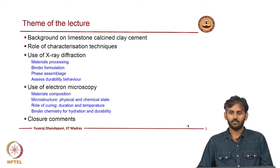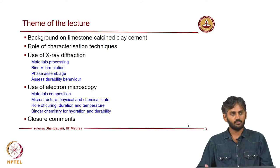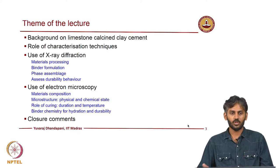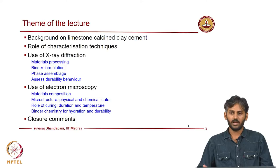For instance, XRD can be used to narrow down on material processing, formulations of binders to study, assess phase assemblage, and also to explain durability behaviors. We will then move into microscopy and look at how microscopy techniques can be used to assess material composition, microstructure, physical and chemical state, role of curing — involving curing duration as well as curing temperature — and role of binder chemistry, which can be assessed using EDS to explain hydration and durability behavior.